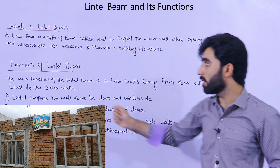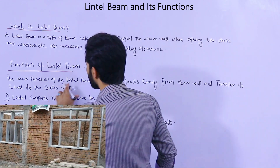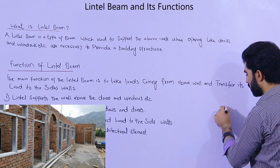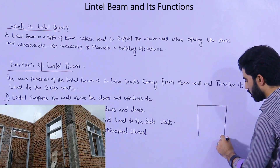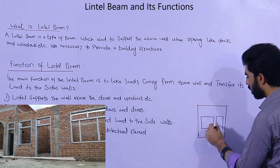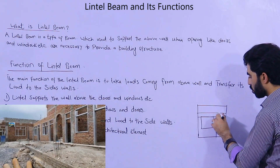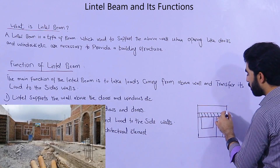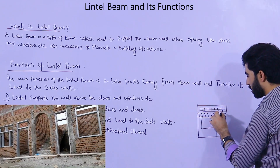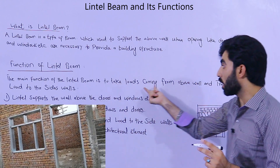Now, what are the functions of a lintel beam, and if you don't provide one, what happens? The main function of a lintel beam is to take the load coming from the above wall. Look at here — this is a door and this is a window. On the top of the door and window we are providing a beam, and this beam is called a lintel beam. On top of this lintel beam we are doing brick masonry.